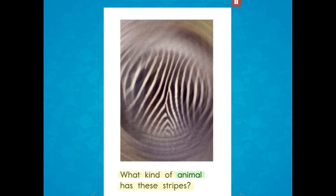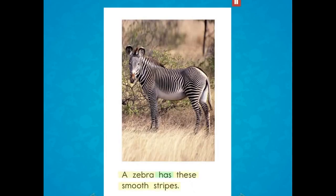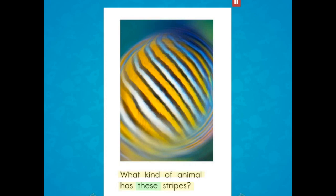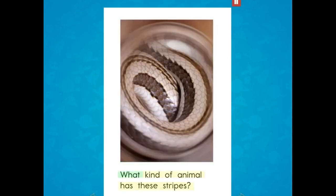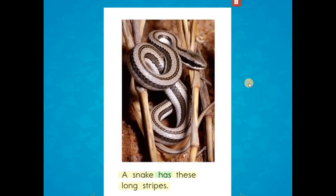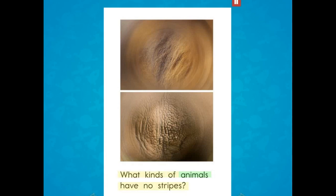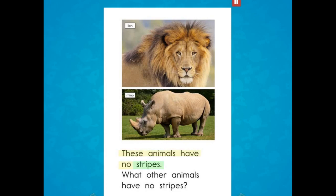What kind of animal has these stripes? A fish has these thin stripes. What kind of animal has these stripes? A snake has these long stripes. These animals have no stripes. What other animals have no stripes?